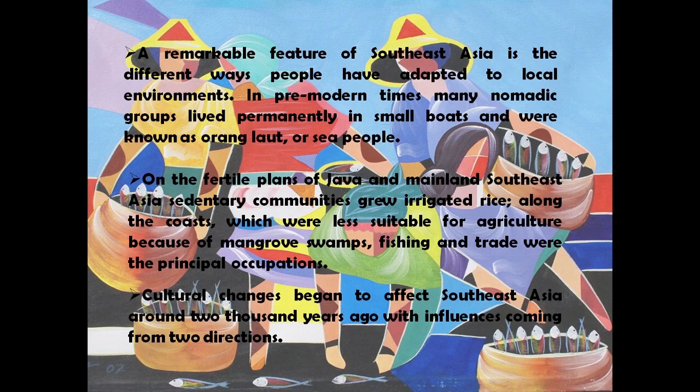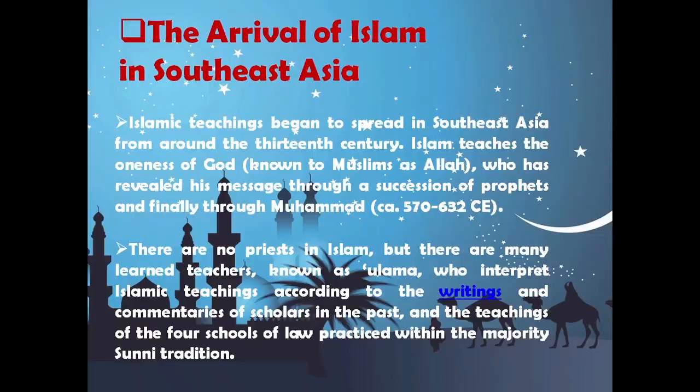In pre-modern times, many nomadic groups lived permanently in small boats and were known as Orang Laut, or sea people. On the fertile plains of Java and mainland Southeast Asia, sedentary communities grew irrigated rice. Along the coasts, which were less suitable for agriculture because of mangrove swamps, fishing and trade were the principal occupations.